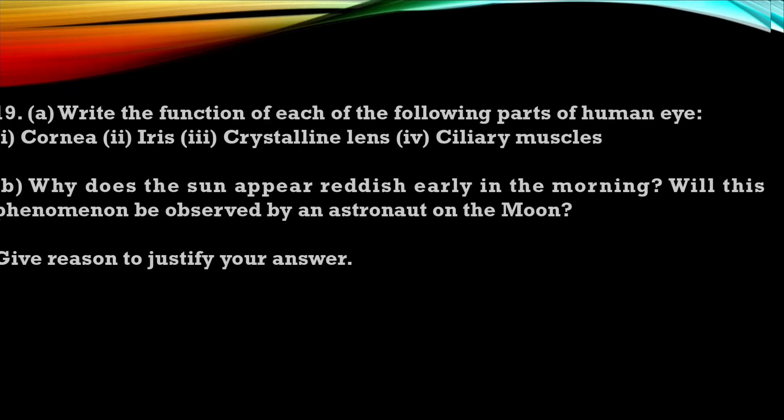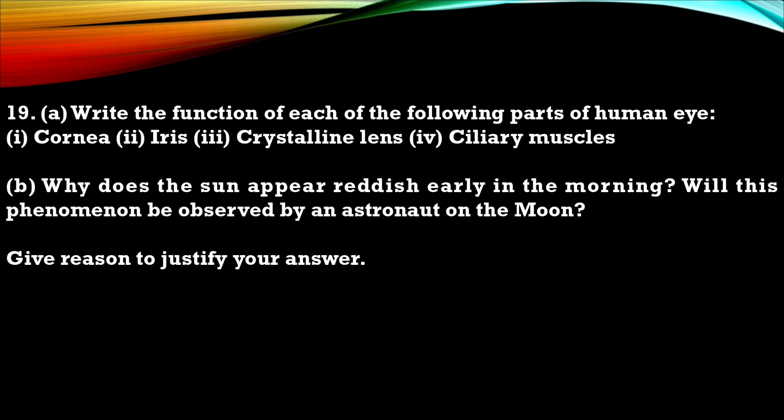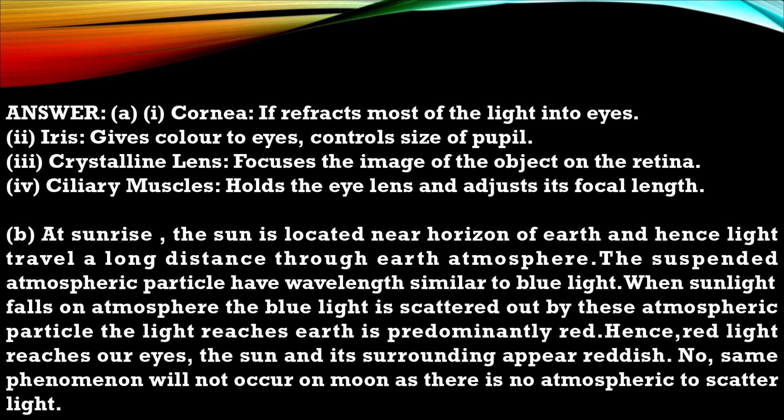Question 19. A. Write the function of each of the following part of human eye: cornea, iris, crystalline lens, ciliary muscles. B. Why does the sun appear reddish early in the morning? Will this phenomena be observed by an astronaut on the moon? Give reasons to justify your answer. So this is the answer for that question.